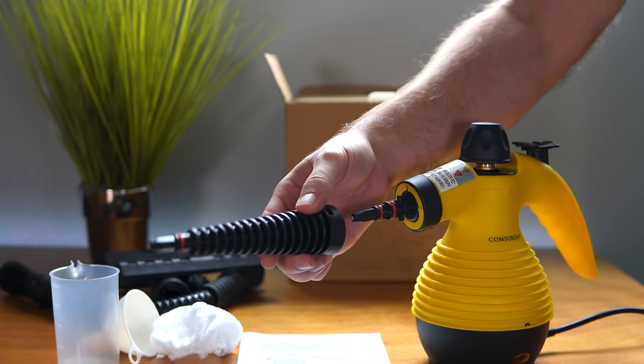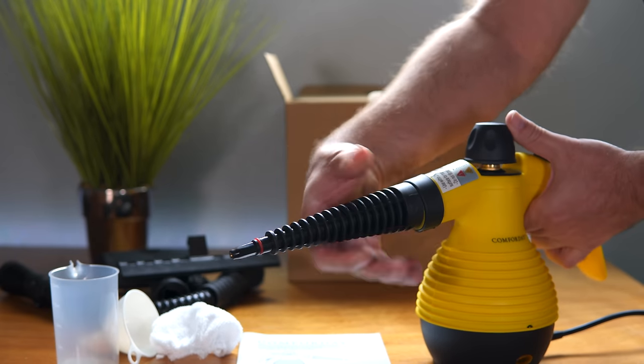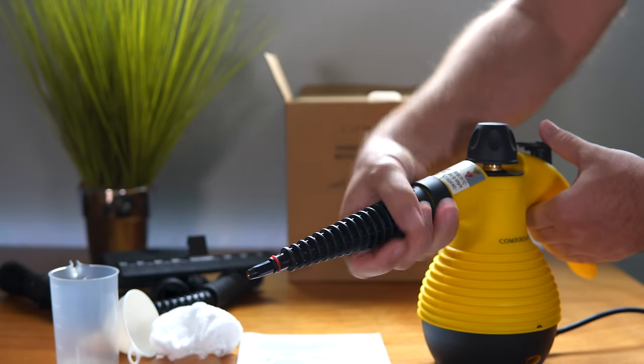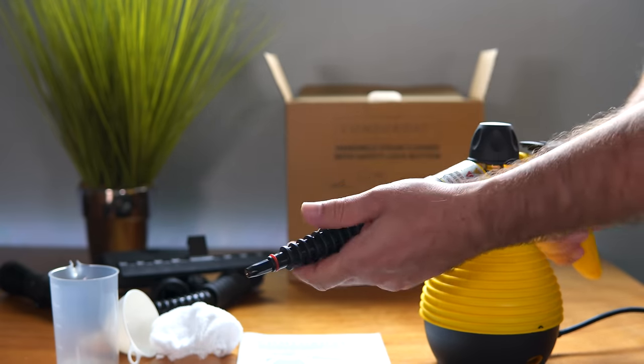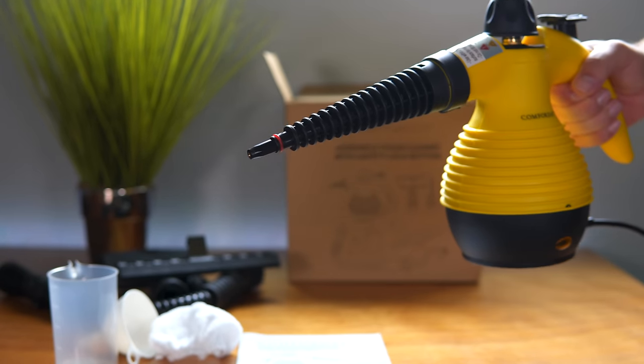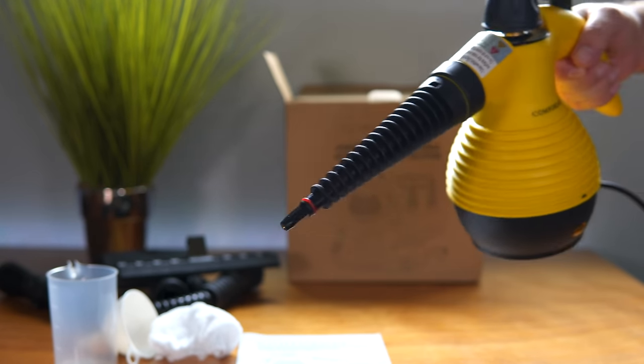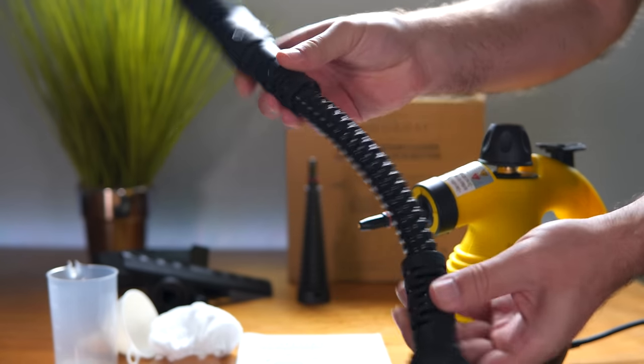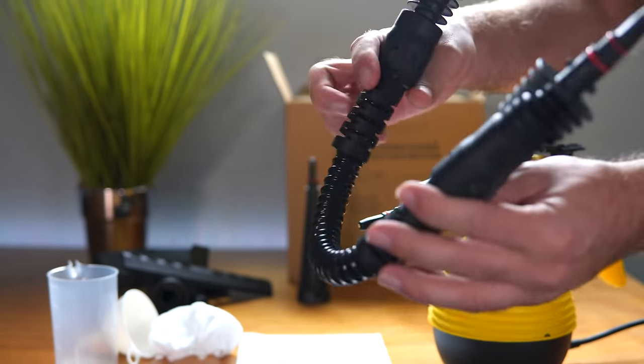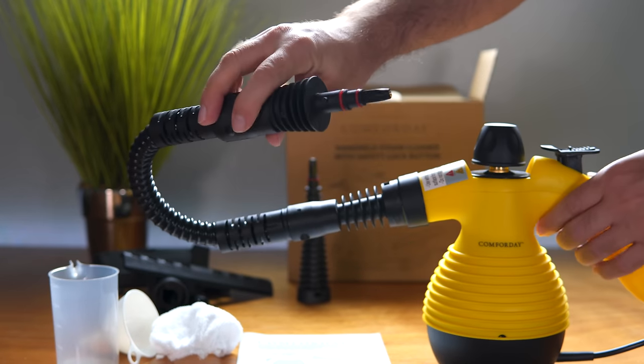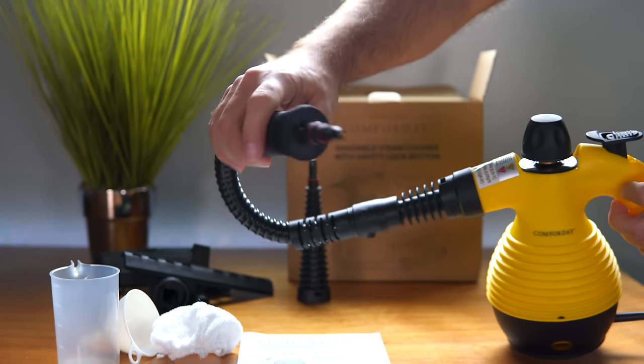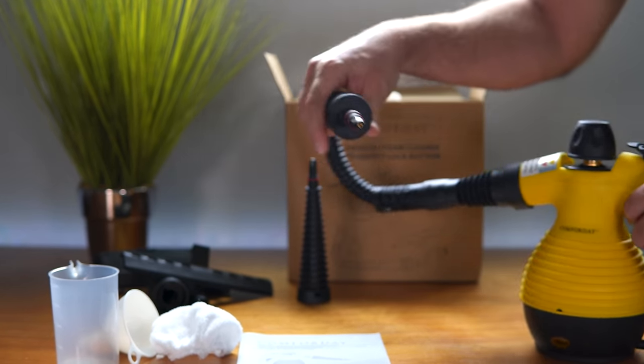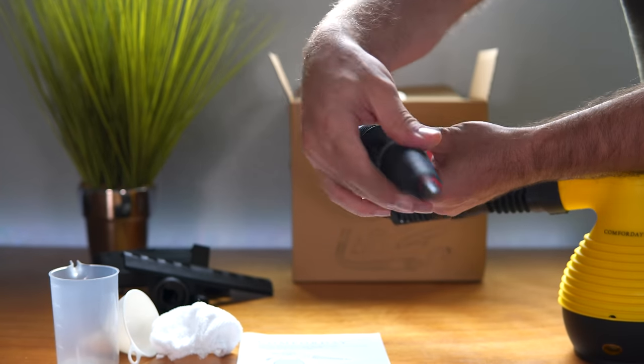Attaching an attachment should be as simple as sliding over and turning it counterclockwise. Now we have this adapter here. If you're trying to clean like a little crevice or something, this would be perfect for that. This flexible tube extension is just to prolong the distance between the steamer and the area that you're working at. Then you can attach whatever you want to this.